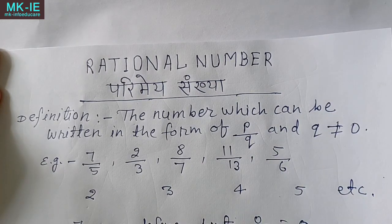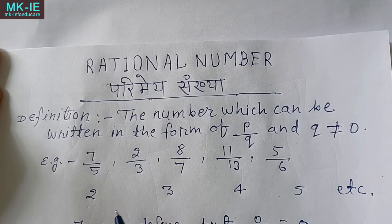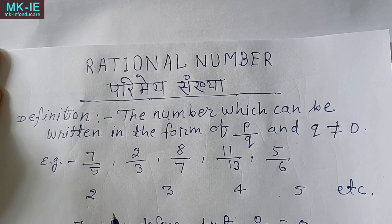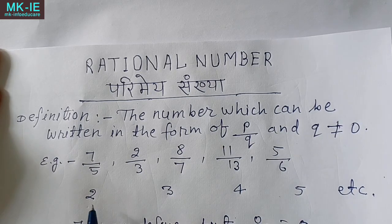यहाँ पे जितने भी counting numbers होते हैं वो सारे rational number का part होते हैं। Counting numbers, natural numbers, whole numbers, even numbers, prime numbers, composite numbers — सारे numbers rational number हो जाएंगे।